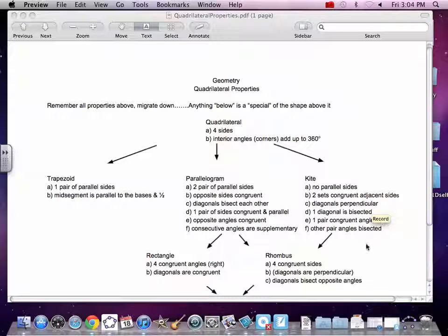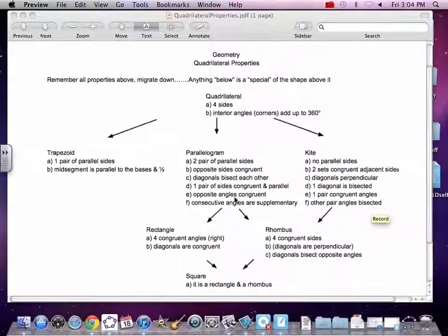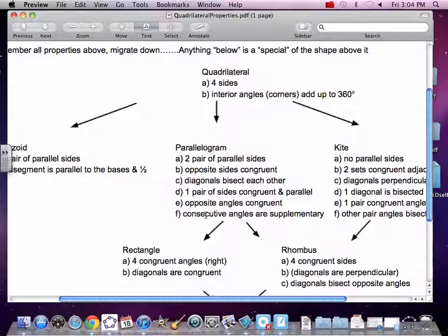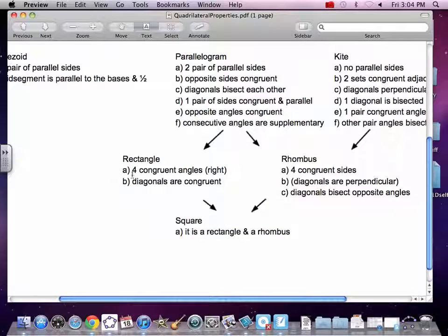We are now going to deal with rectangles and construct a rectangle. If we look at the properties of a rectangle, a rectangle has four congruent angles, four right angles.